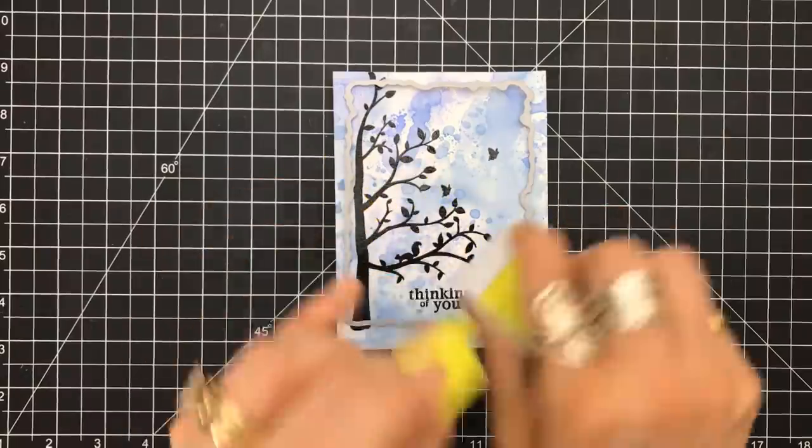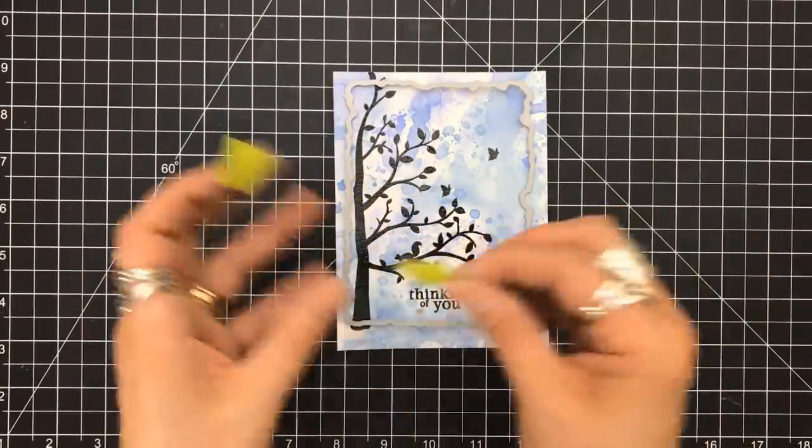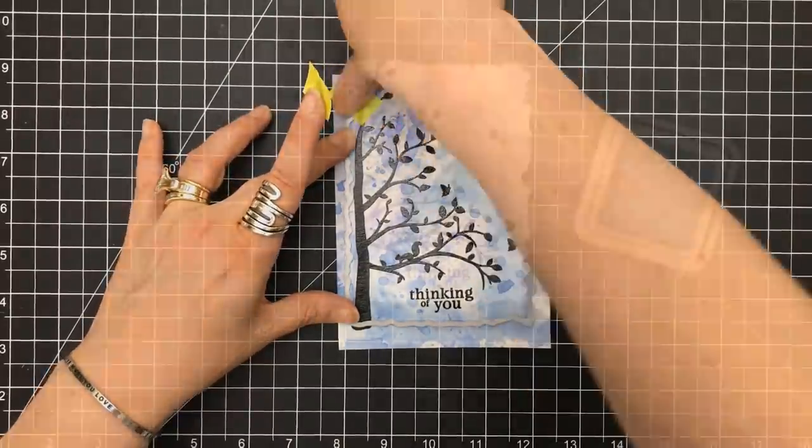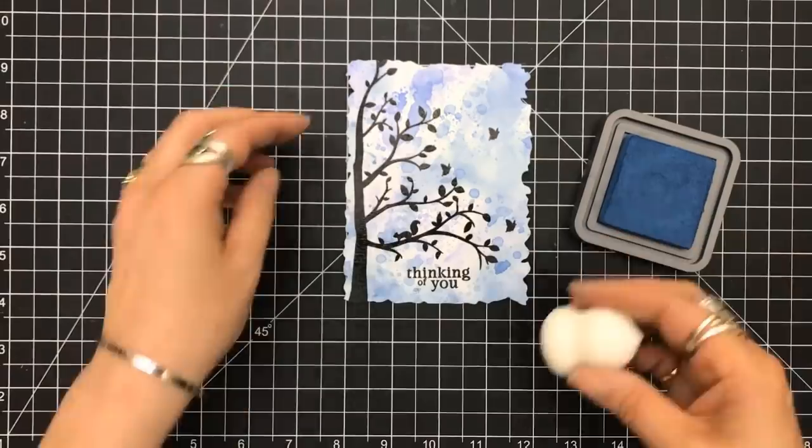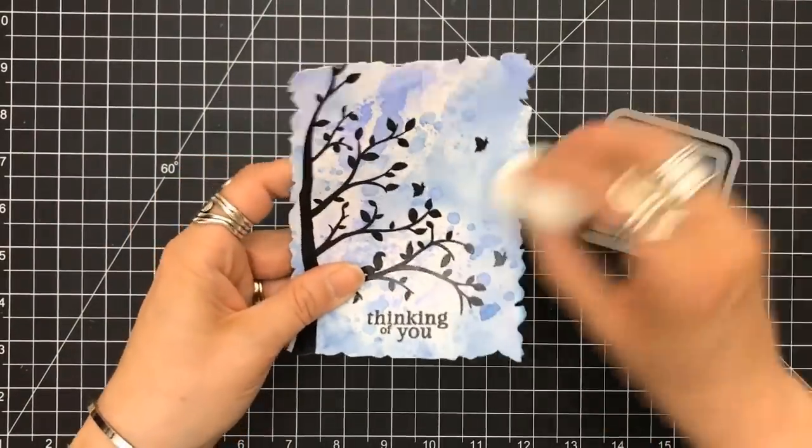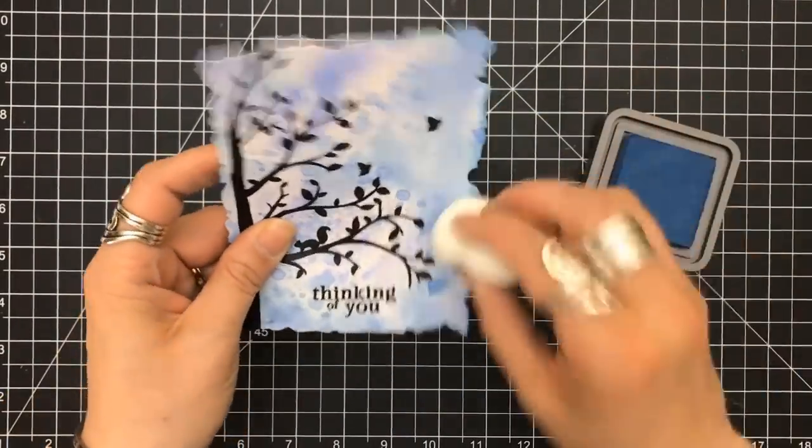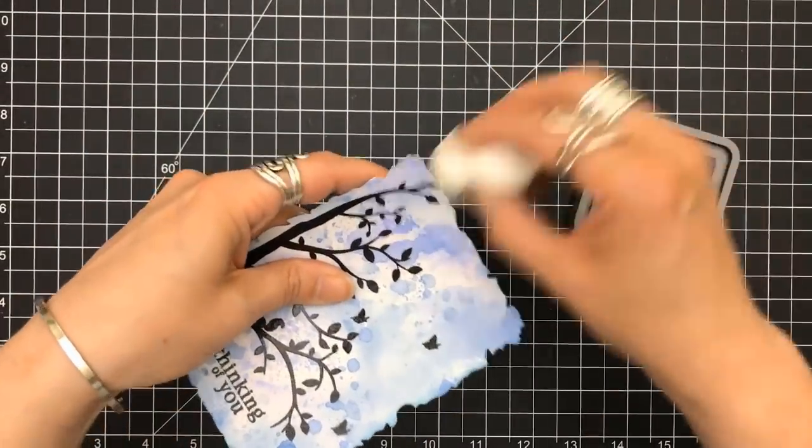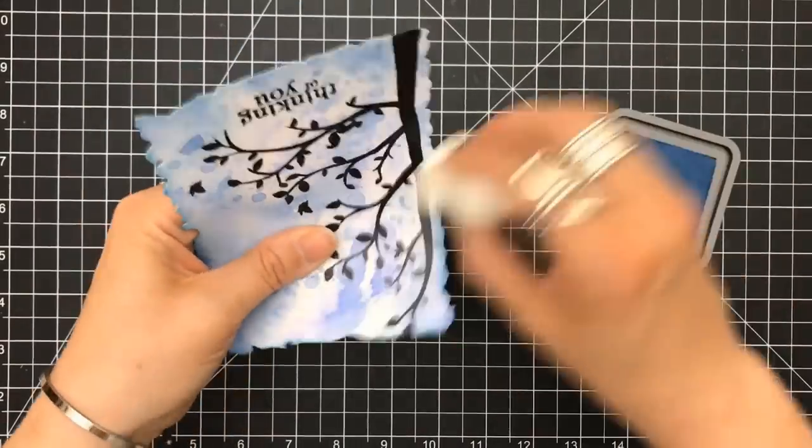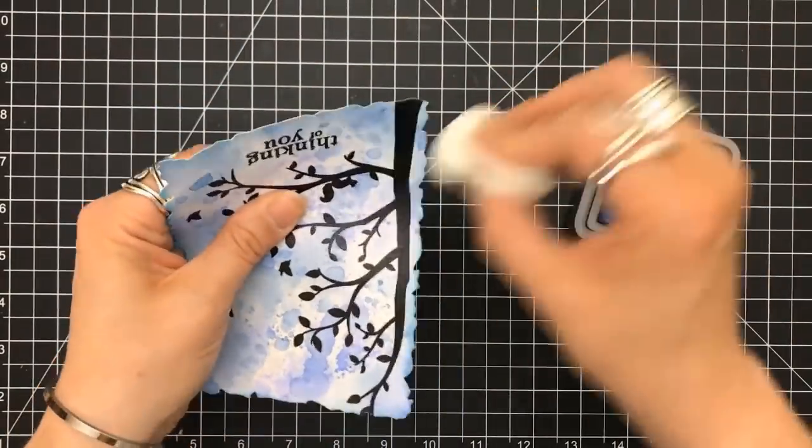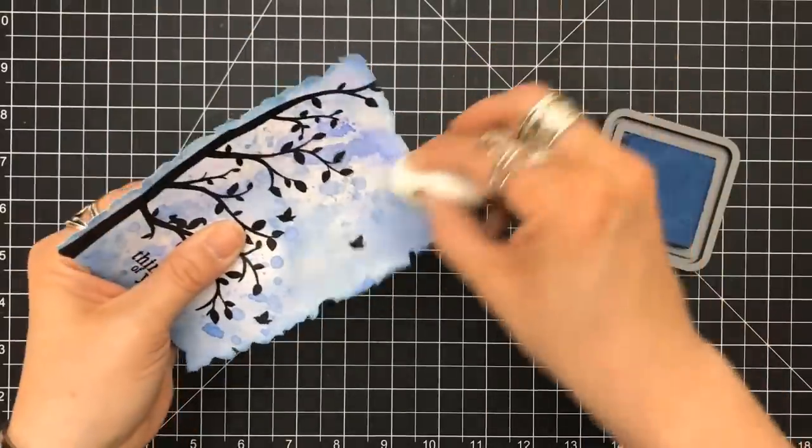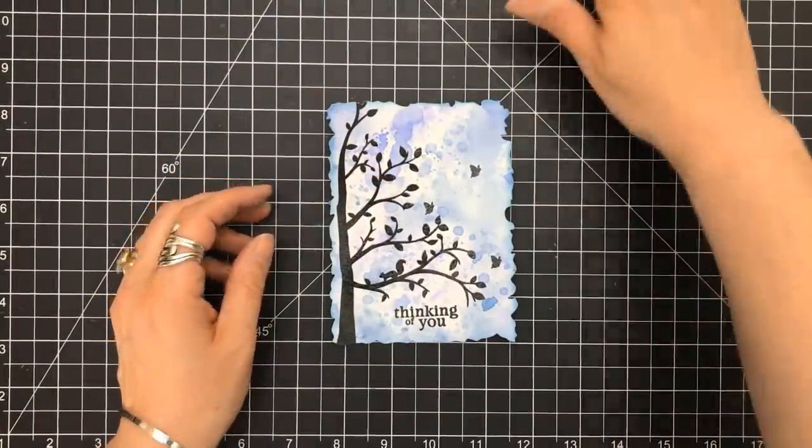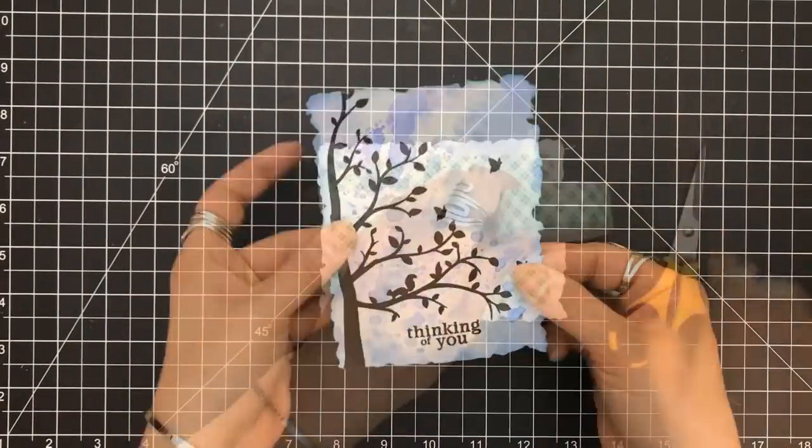I grabbed my Penny Black Antique Frame dies, the largest one, and I'm setting that in place. I'm going to die cut this piece out. I wanted to make sure that the trunk passed it. I am trying these new blenders by Nuvo, they're sponge blenders. I love them. What is great about these is one, their size, two, the feel, and three, you can wash them out and reuse them.